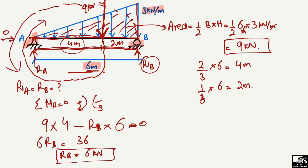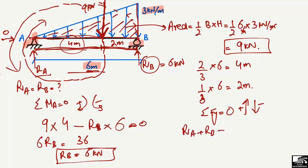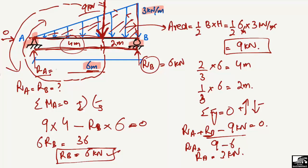RB is 6 kilonewton at the roller support. To find RA, we use the summation of all vertical forces equal to zero. Upward forces are positive and downward forces are negative. So RA plus RB minus 9 kilonewton equals 0. Since RB is 6 kilonewton: RA equals 9 minus 6, so RA equals 3 kilonewton.